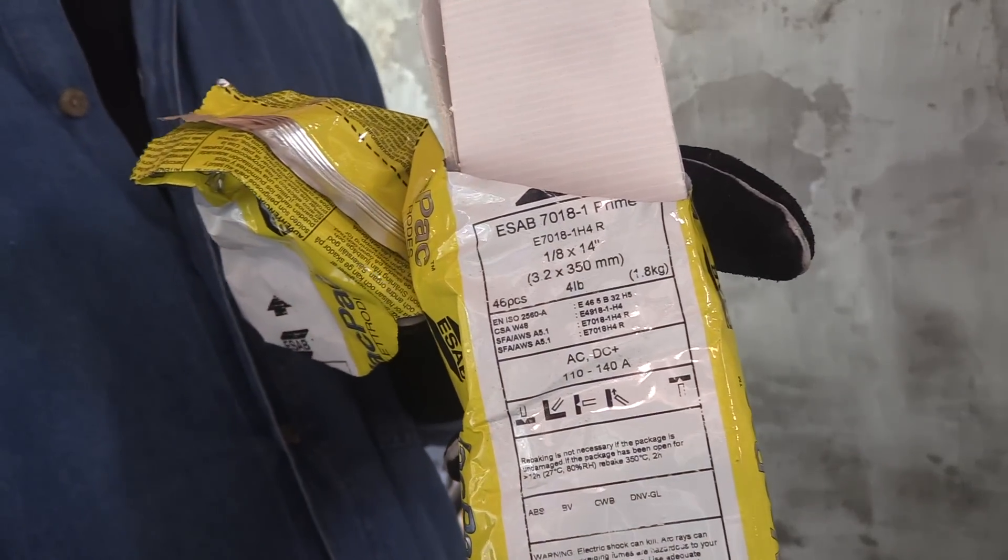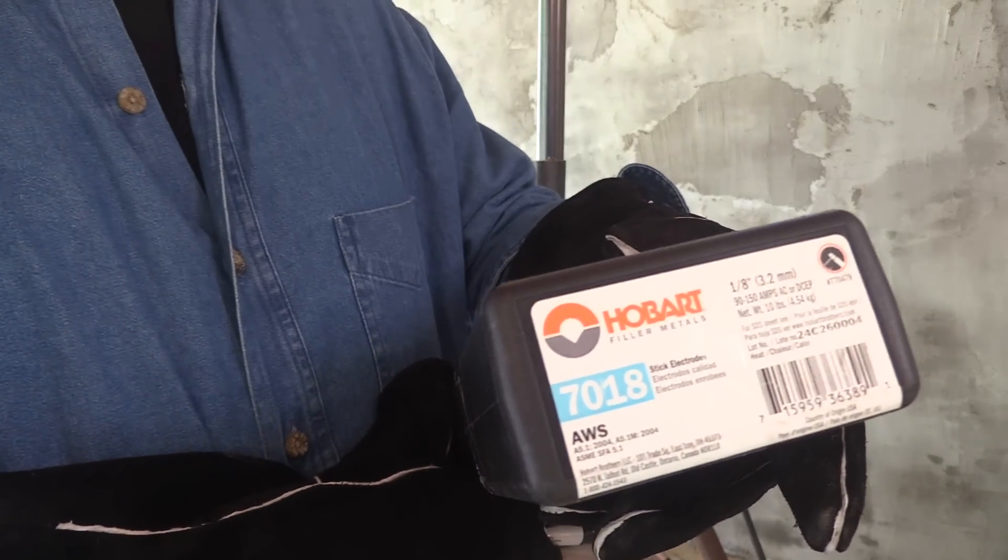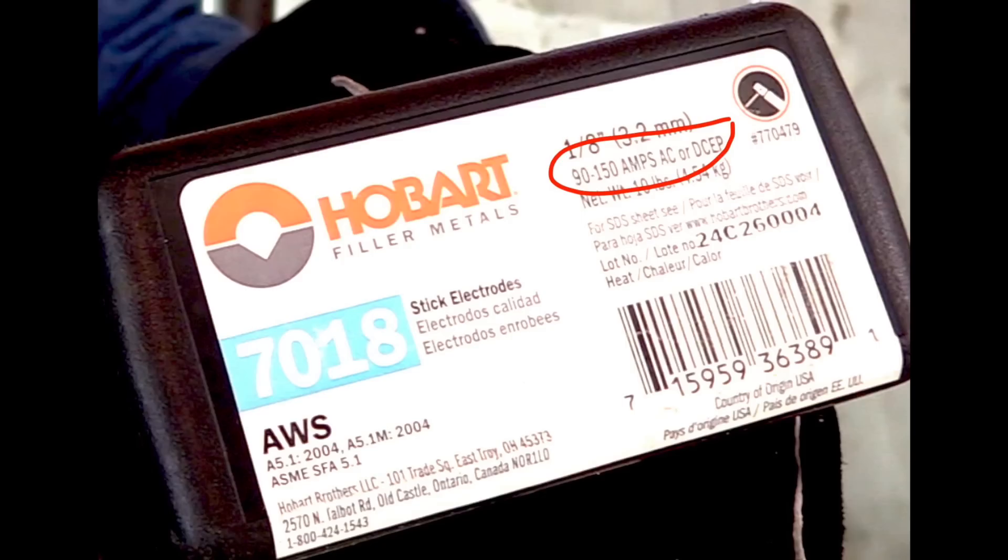One of the brands is going to be these ESAB 7018 one-eighth. You can see the amperage range is listed at 110 to 140 amps. I'm going to compare those to these Hobart rods. Amperage range 90 to 150.